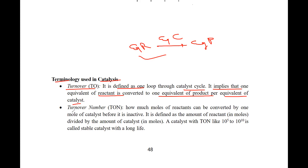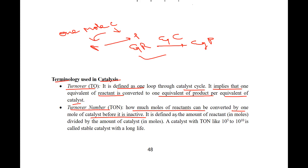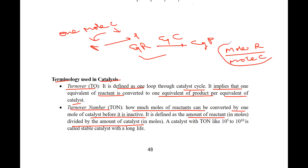Turnover number is the number of moles of reactant that can be converted by one mole of catalyst before it becomes inactive. Suppose we take one mole of catalyst — that one mole of catalyst will convert moles of reactant to product. Turnover number (TON) is defined as moles of reactant divided by moles of catalyst.